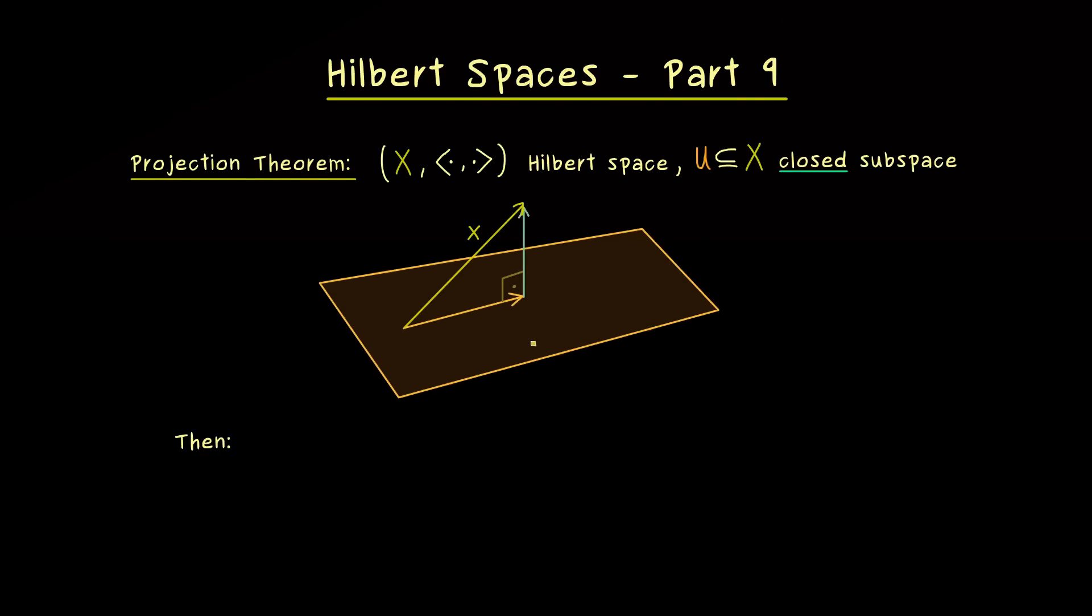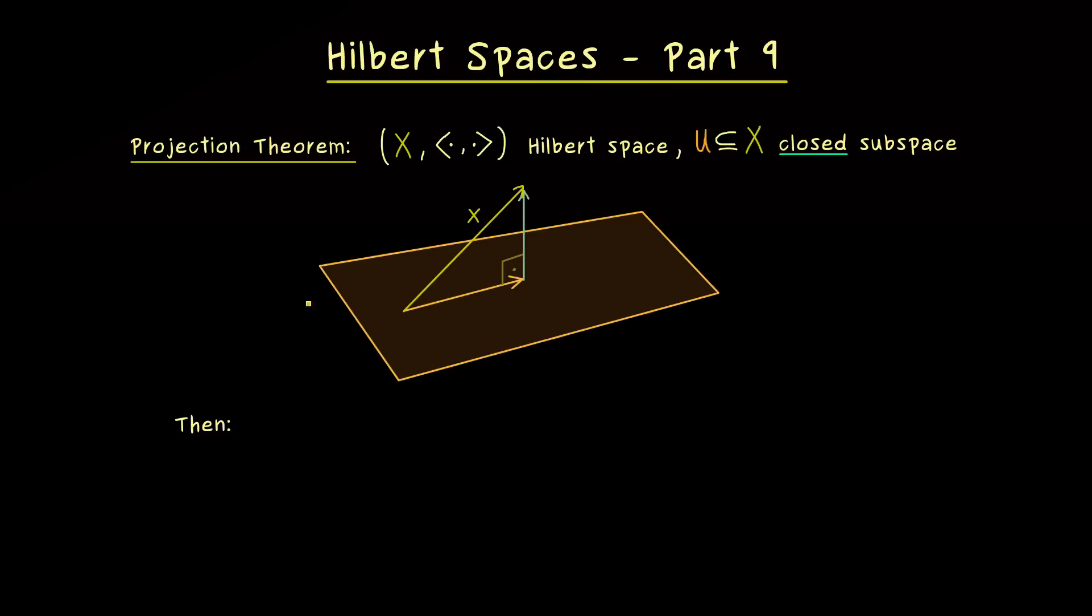And therefore this vector inside the subspace U is called the orthogonal projection of x onto U. So the claim of the projection theorem is that this orthogonal projection always exists. So it does not matter which element x from the Hilbert space we choose. And most importantly,